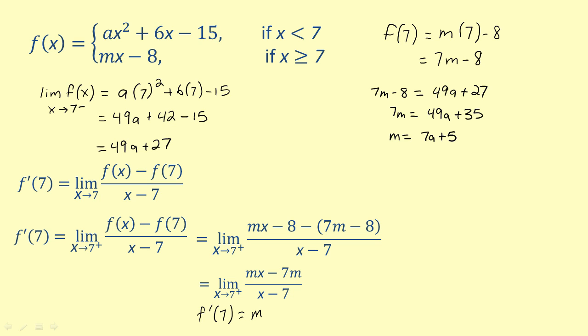Looking ahead, we will be using ax squared plus 6x minus 15 when x is 7 to find the left limit of the derivative. Notice that the constant in this sub-function is a. We can save time by rewriting the right limit we just found in terms of a using our equation for m. We now have f prime of 7 equals 7a plus 5.